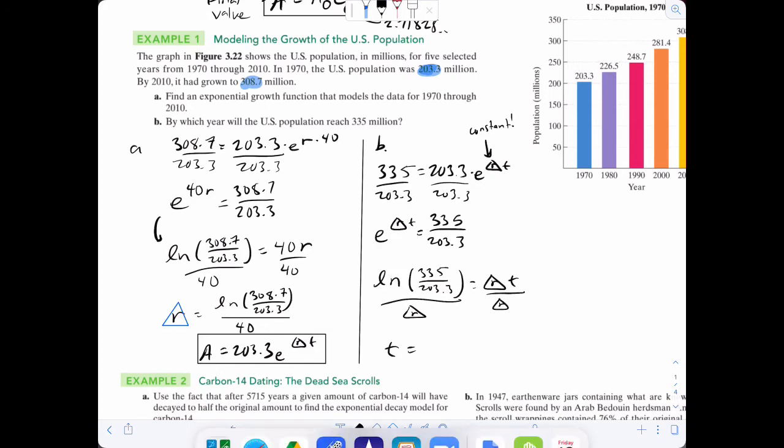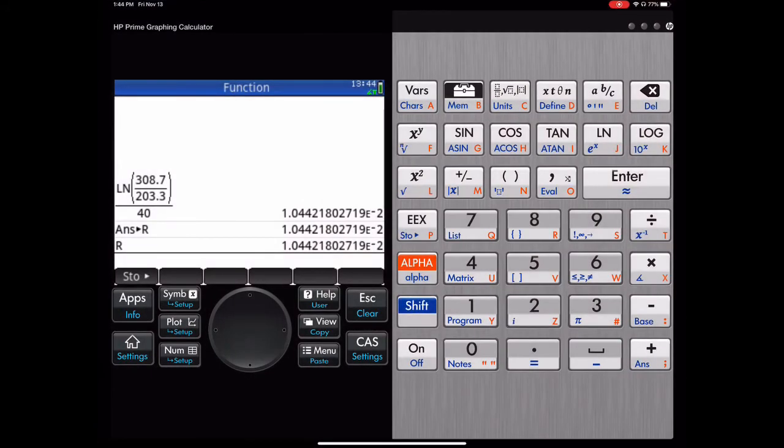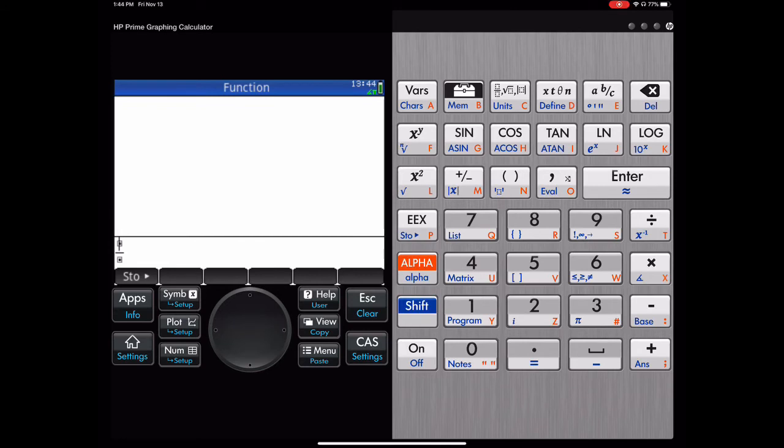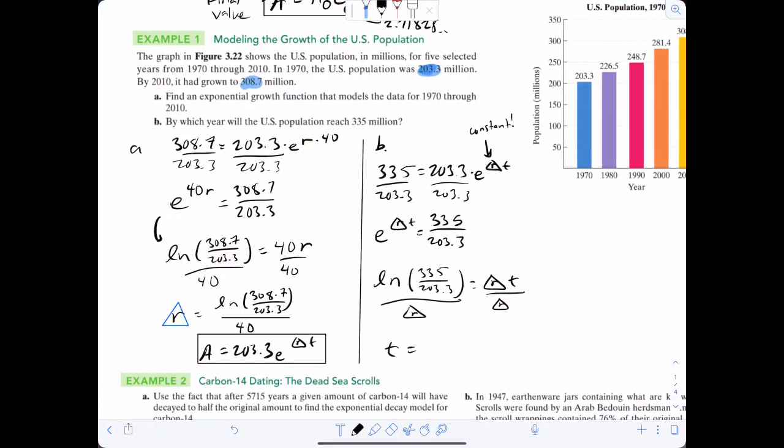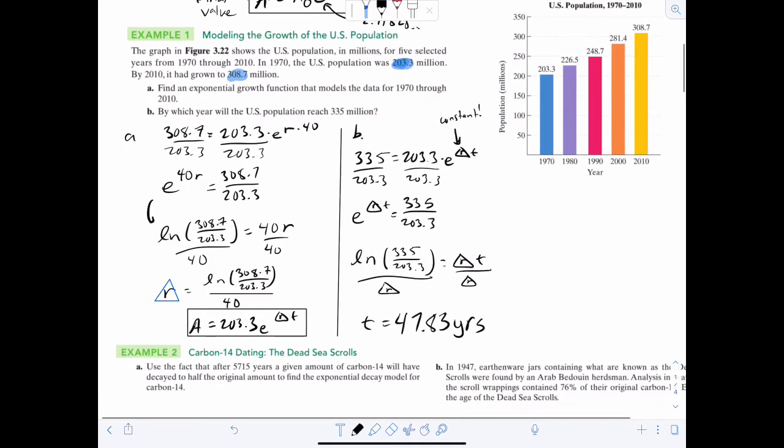So now we go back to our calculator. Fraction bar, natural log 335 over 203.3, divide that by R. And there it is. 47.83 years. Now the question is by which year will the US population reach 335 million? So if it was currently in 1970, we're going to add about 48 years and that's going to be 2018. There's our answer.